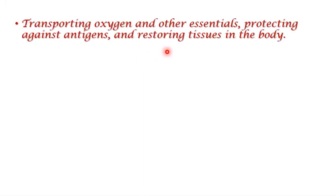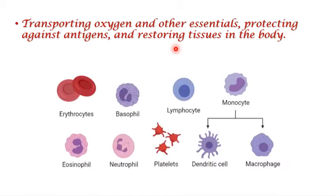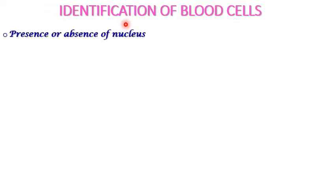The main role of blood cells is to transport oxygen throughout the body, to protect the body against antigens, and to restore tissues in the body. The major types include erythrocytes, basophils, lymphocytes, monocytes — which are further classified into dendritic cells and macrophages — eosinophils, and neutrophils. Now that we know what blood cells are, we will learn how to identify them.